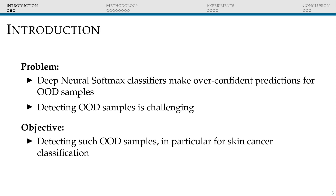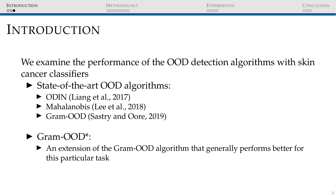However, detecting such samples is quite challenging, in particular for skin cancer, even though some of the images can be quite different indeed from the training images. In this work, we present a study of OOD detection algorithms for deep neural classifiers trained over a skin cancer data set.